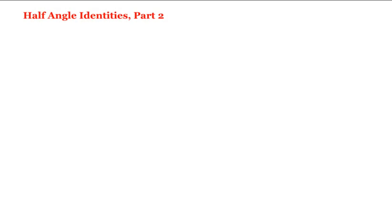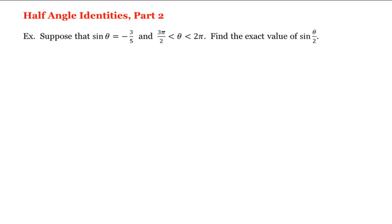Let's work with the half-angle identities. For example, if sine of theta is negative three-fifths and theta is between three pi halves and two pi, we'll find the exact value of sine of theta over two.